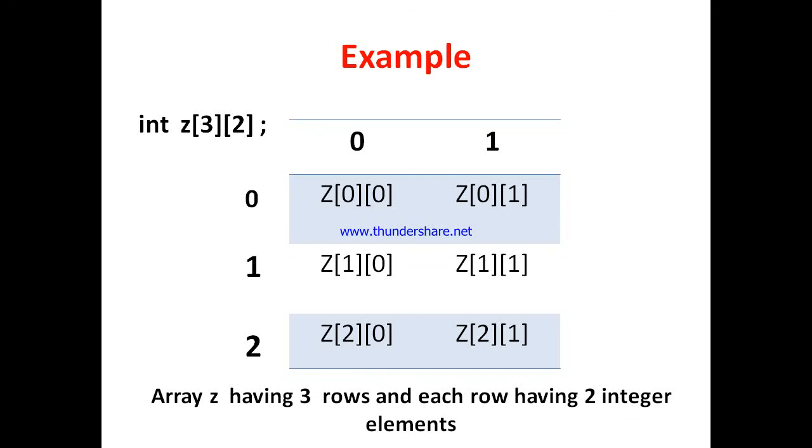Now third example: int z[3][2]. In this example rows are 3: 0, 1, 2. Columns are 2: 0 and 1. Elements are [0][0], [0][1], [1][0], [1][1]. Here [2][0], [2][1].